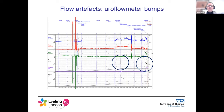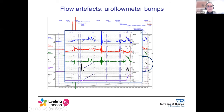Uroflow meters are commonly bumped. Here we have a nice smooth uroflow line together with a rise in P-DET and rise in urine volume flow — that's a true void. Over here, we don't have the corresponding features of a rise in P-DET and no change in flow volume, so this is in fact an artifact.